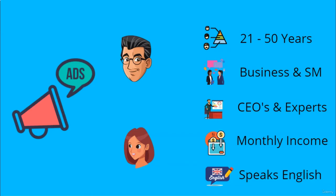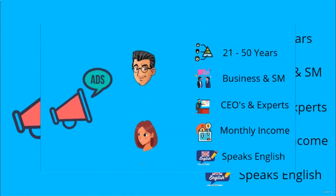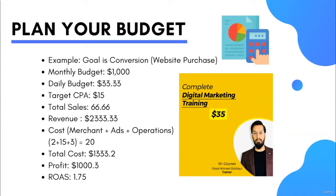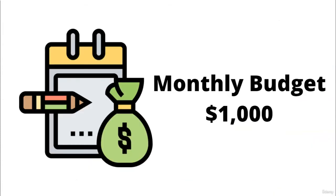After selecting the target audience, we move to the budget area. Selecting the right budget with forecasted results is the best way to get started. Advertisers must be very clear about what they want to achieve. My goal here is website conversion — I want the audience to purchase my training through the website. The best way to plan your budget is by doing proper costing and forecasting results through a self-created profit calculator. I have a monthly budget of $1,000, which means $33.33 daily.